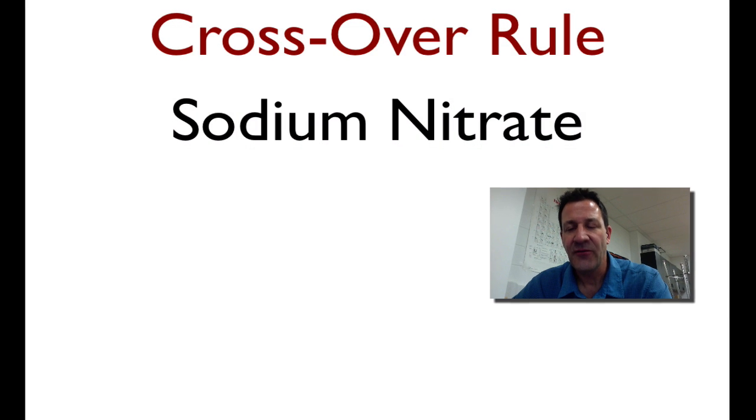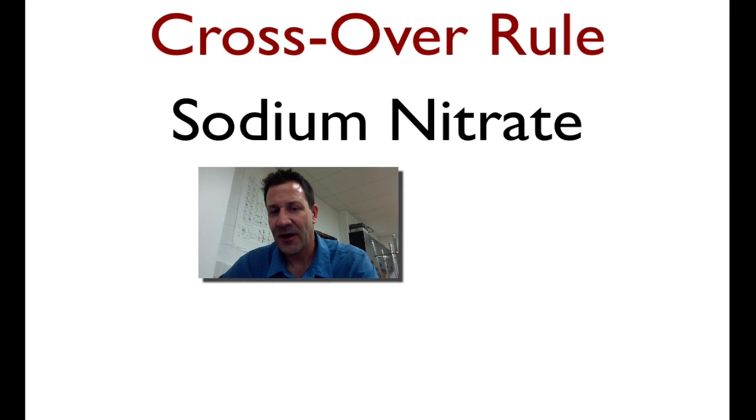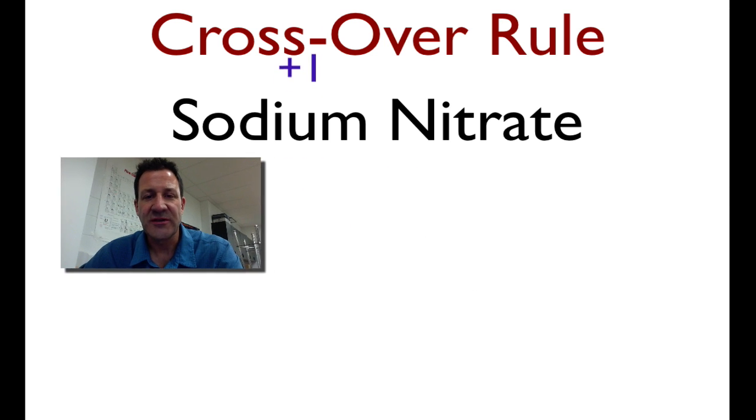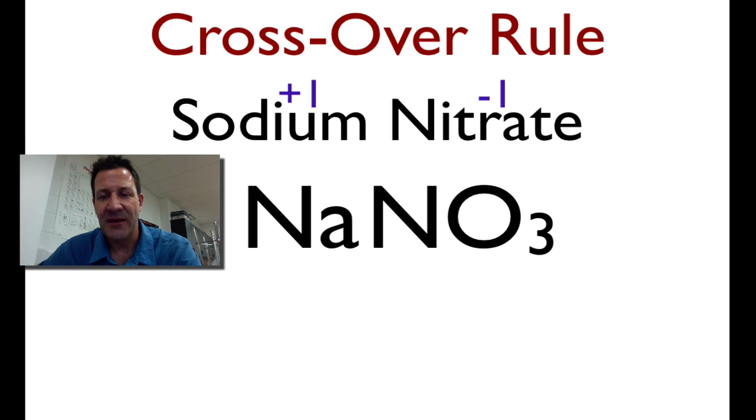Let's do another one. Sodium nitrate, you can see that it has a polyatomic ion. But we're going to do the same thing. Sodium is plus 1. Nitrate is minus 1. I'm going to write down the symbols for sodium and nitrate. It's NaNO3. Now, this one is pretty easy. Both the sodium is plus 1, and the nitrate is minus 1. So they both have 1s in them.